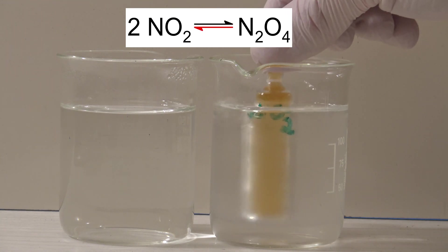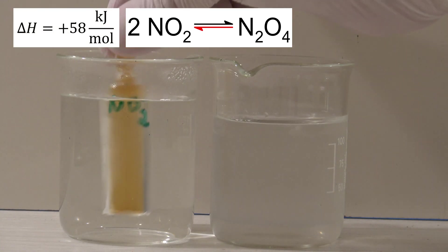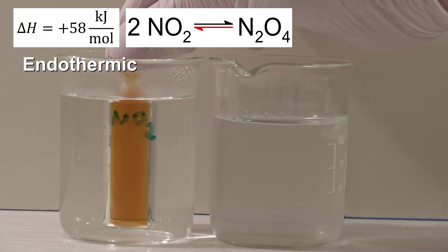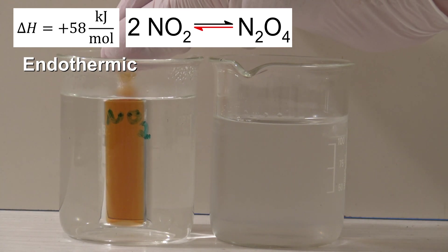The enthalpy of the reverse reaction is positive, so it's endothermic. This causes the equilibrium to shift to the left in the hot water to act against the increasing temperature.